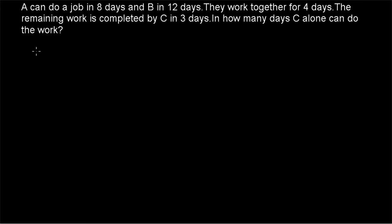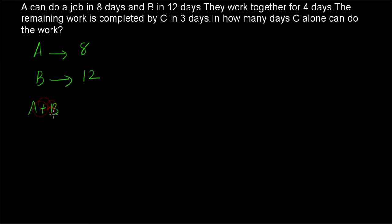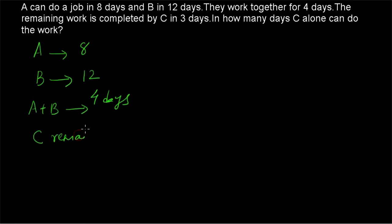A can do a piece of work in 8 days and B can do the same piece of work in 12 days. A and B are working together for 4 days. The remaining work will be finished by C, and C is finishing it in 3 days.